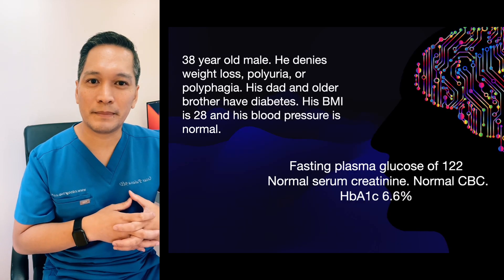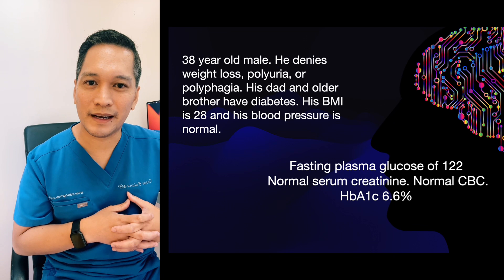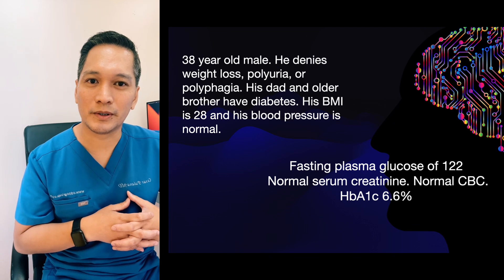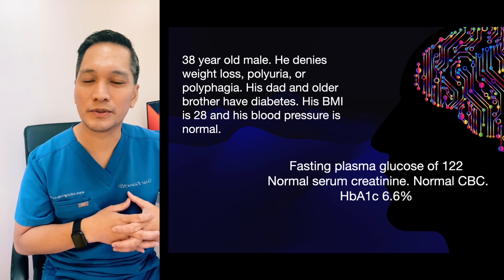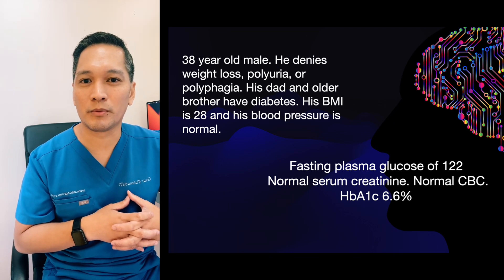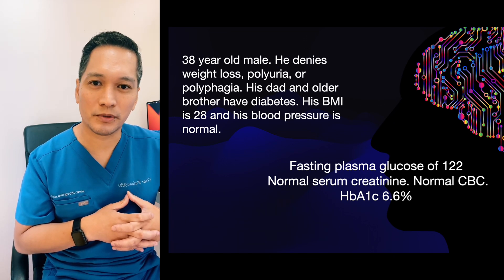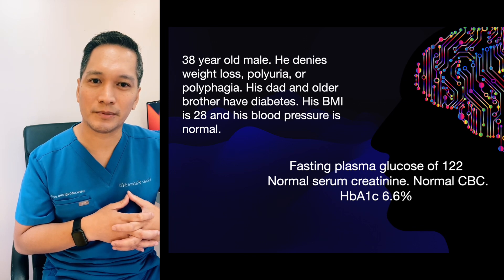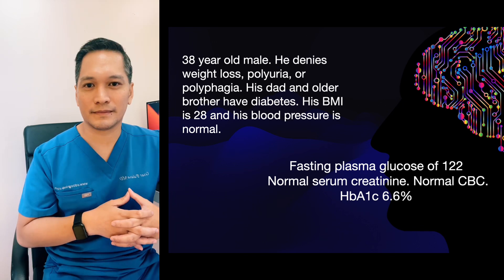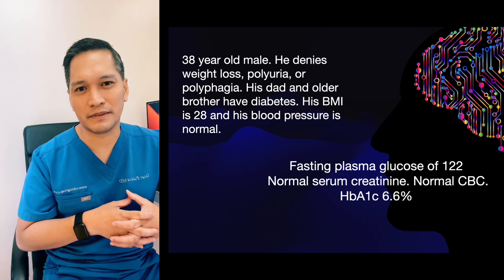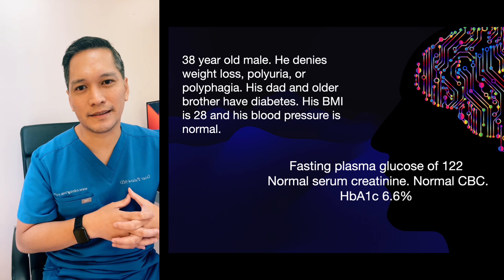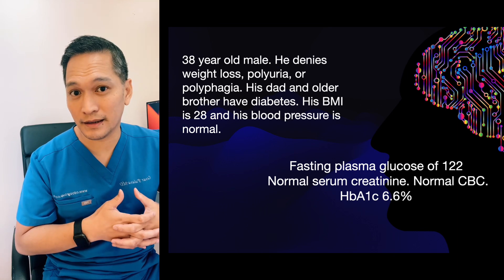Here are the results. Patient X has a fasting plasma glucose of 122, a normal serum creatinine, a normal CBC, and a hemoglobin A1c of 6.6%. He asks you if he has diabetes. Is he diabetic?